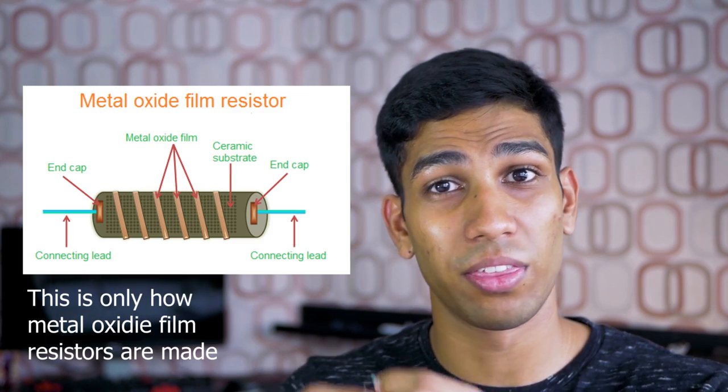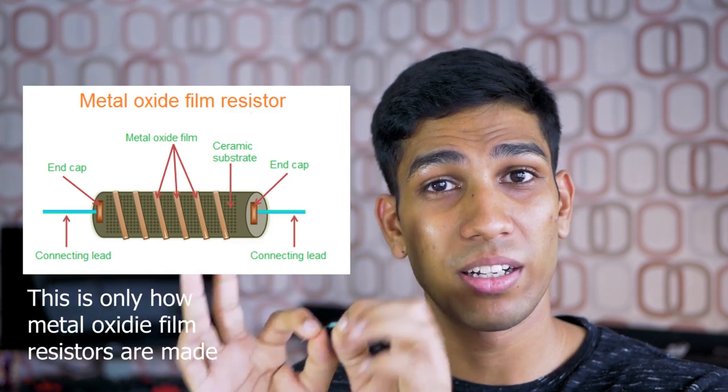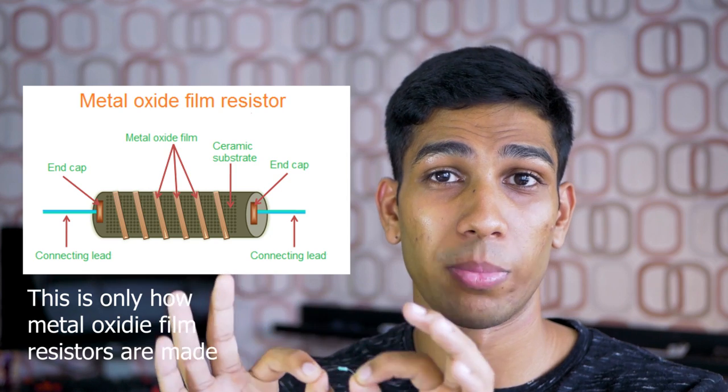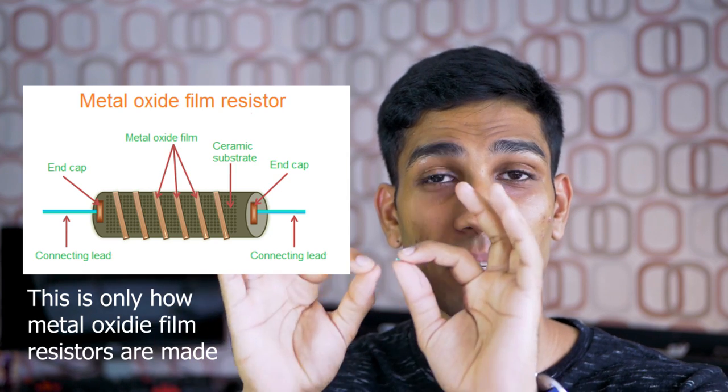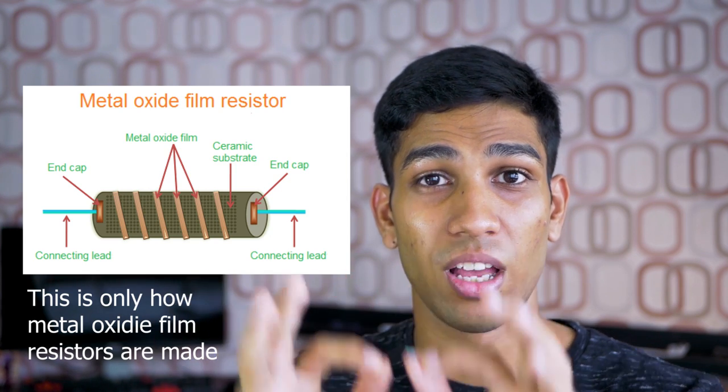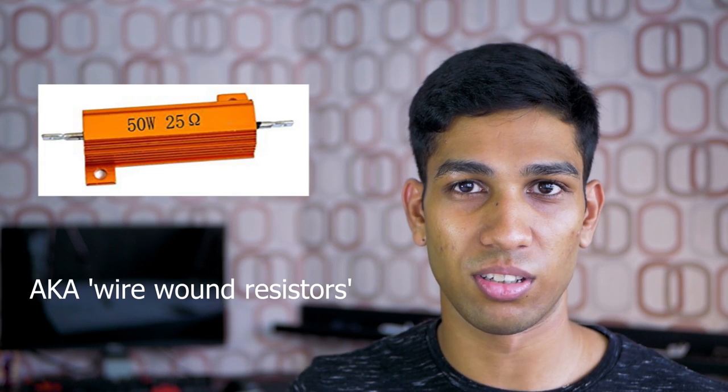Resistors are made by wrapping a thin metal conductive strip around an insulating block. There are three main types of resistors: carbon resistors, metal resistors, and metal oxide film resistors, with metal and metal oxide film resistors being the most common types.